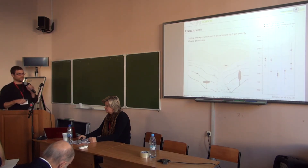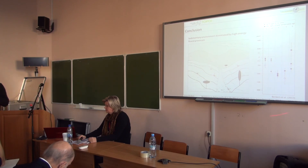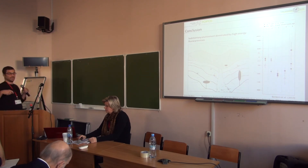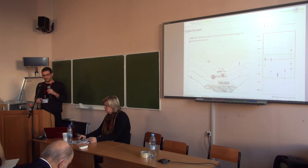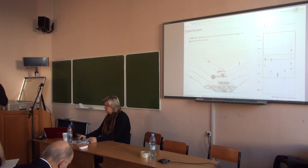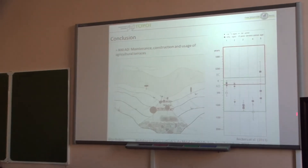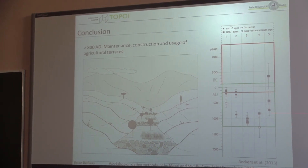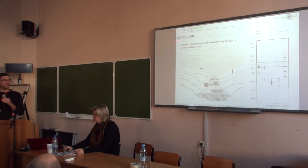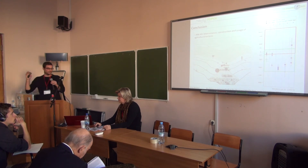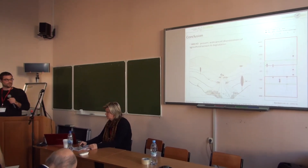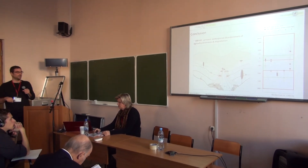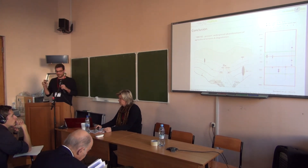To conclude this case study: the environment of Petra was characterized by high-energy fluvial processes up until the 1st century AD, so no agriculture was possible. Then the Nabataeans built those terraces, making cultivation possible, and other people used them at least until the 8th century AD — 400 years longer than the city of Petra itself existed. Sometime after that, we don't know when, the terraces were abandoned, then dissected and eroded, and are only rarely cultivated nowadays.